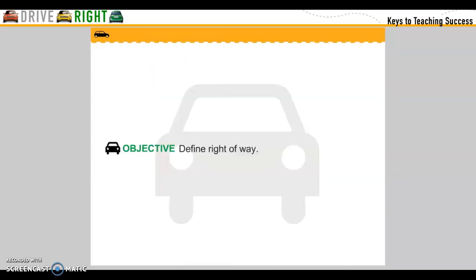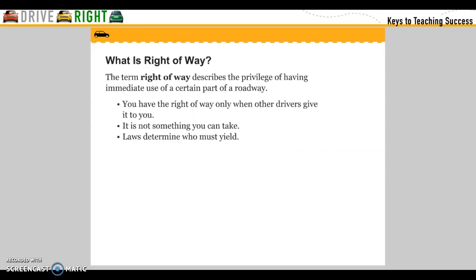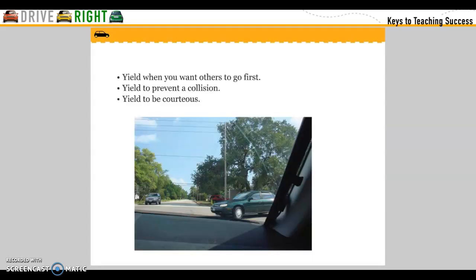Objective: Define Right of Way. The term right of way describes the privilege of having immediate use of a certain part of the roadway. You have the right of way only when other drivers give it to you — it is not something you take. Laws determine who must yield. Yield when you want others to go first, to prevent a collision, or to be courteous.